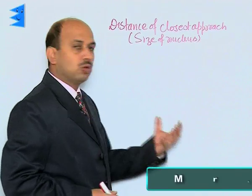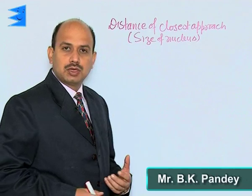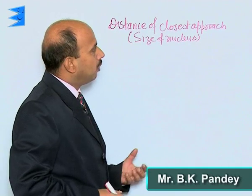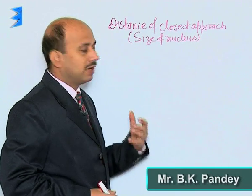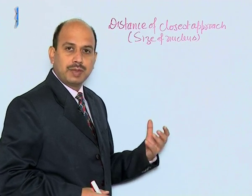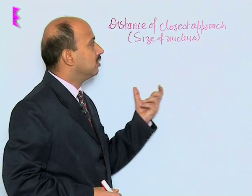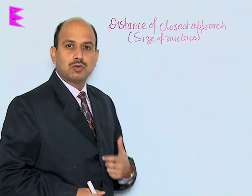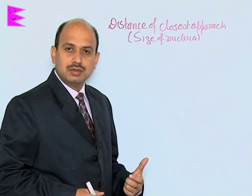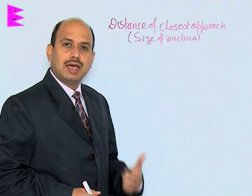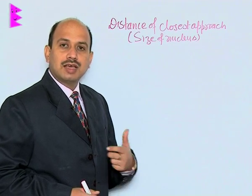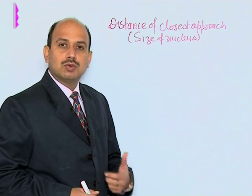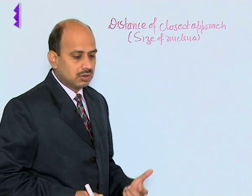Now, we see the distance of closest approach. With the help of Rutherford's alpha ray scattering experiment, this distance of closest approach was calculated, and with the help of this, the size of the nucleus was estimated.